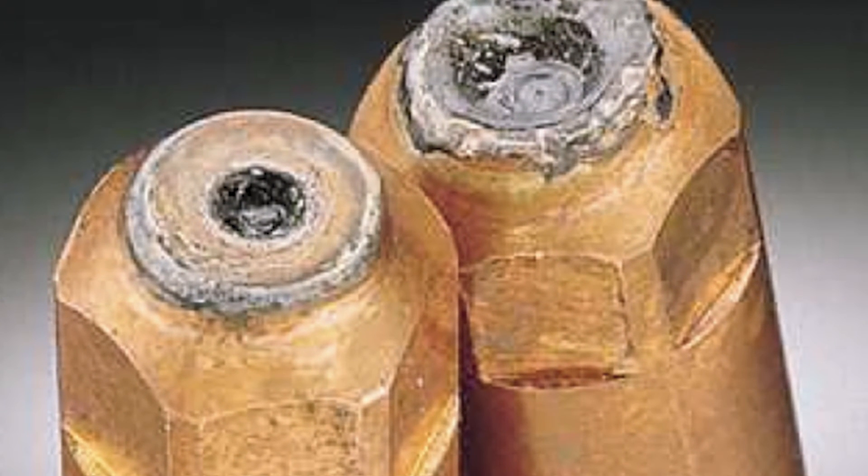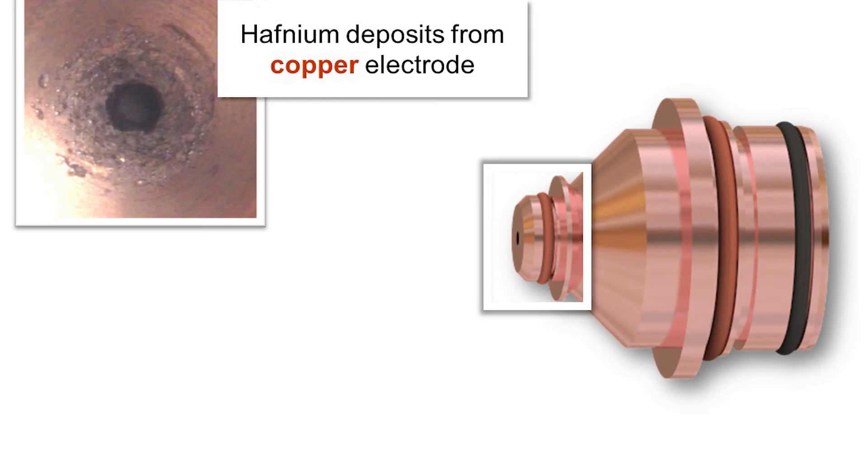At the end of life of a copper electrode, pictured here, copper and hafnium are expelled from the electrode and deposited on the inside wall of the nozzle. When this happens, the plasma arc may jump from the plate to this material inside the nozzle, cutting away the nozzle and often the shield.